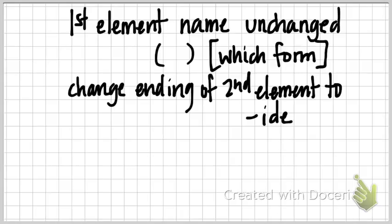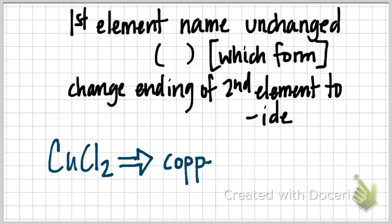Looking at an example, if you have CuCl2, my suggestion would be to name this as if it was a binary compound and put the parentheses in there so you can use Roman numerals to tell the charge between the copper and the chloride. It would be chlorine, but I'm going to change the ending to -ide like I would with a regular binary. So this is copper something chloride.